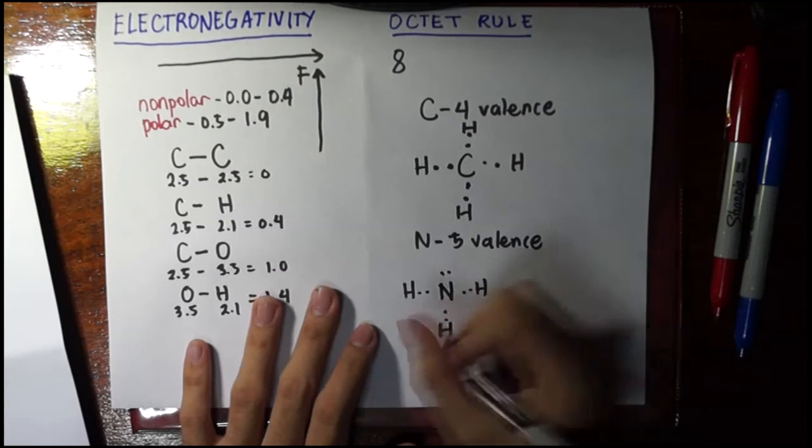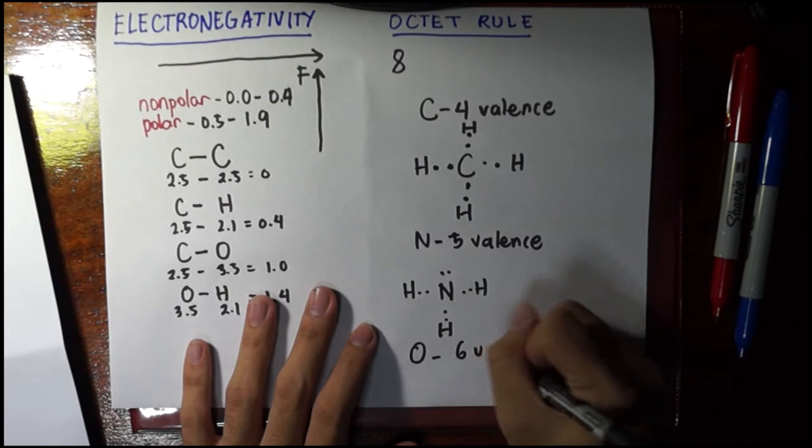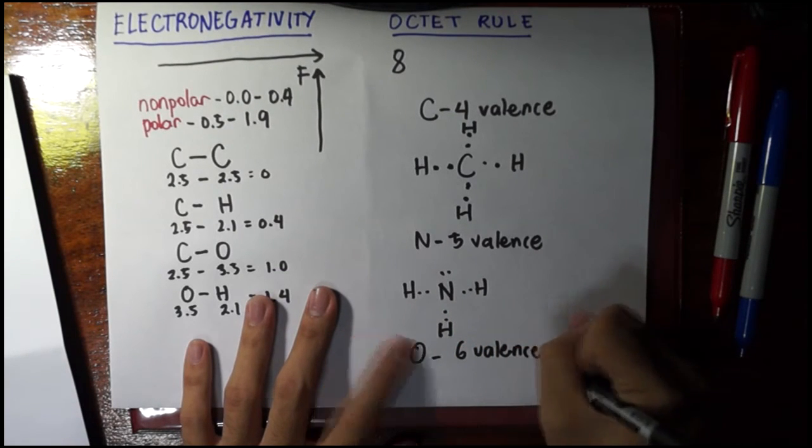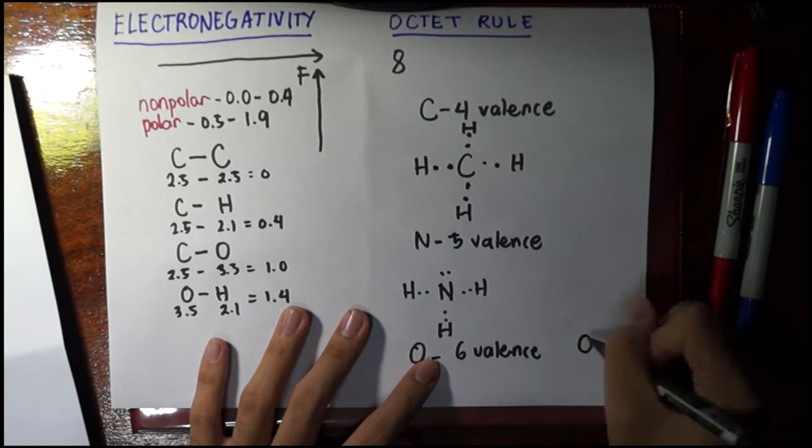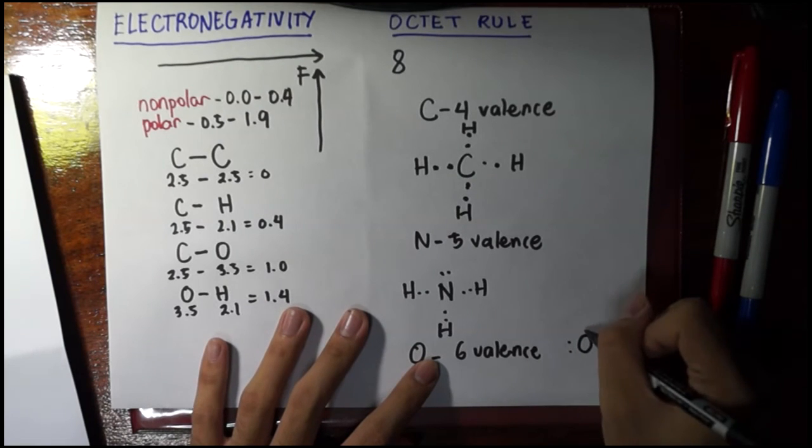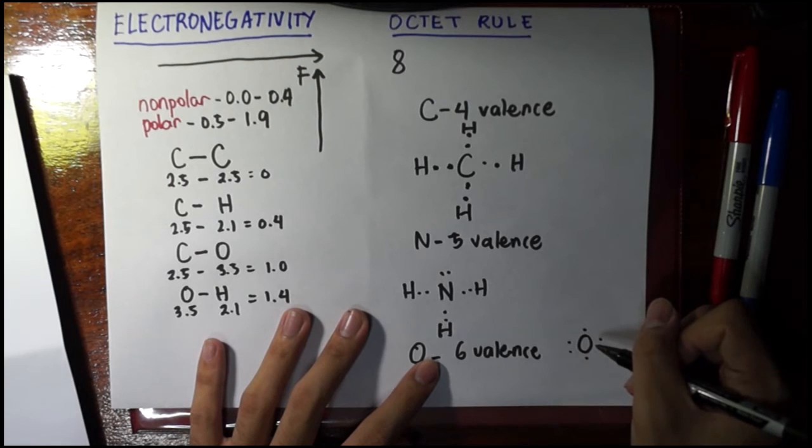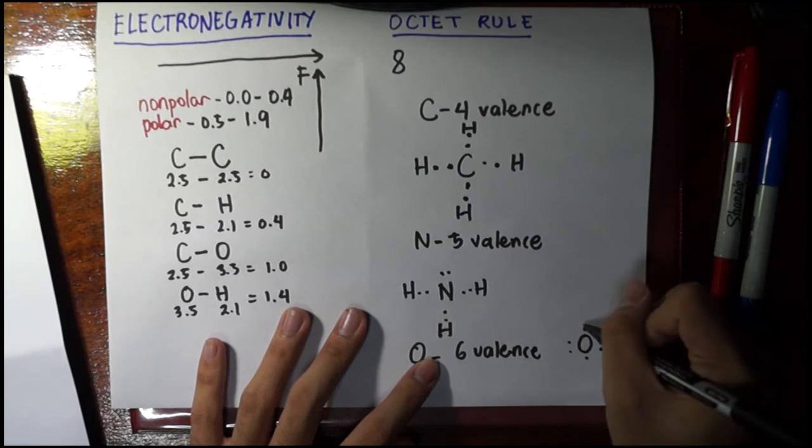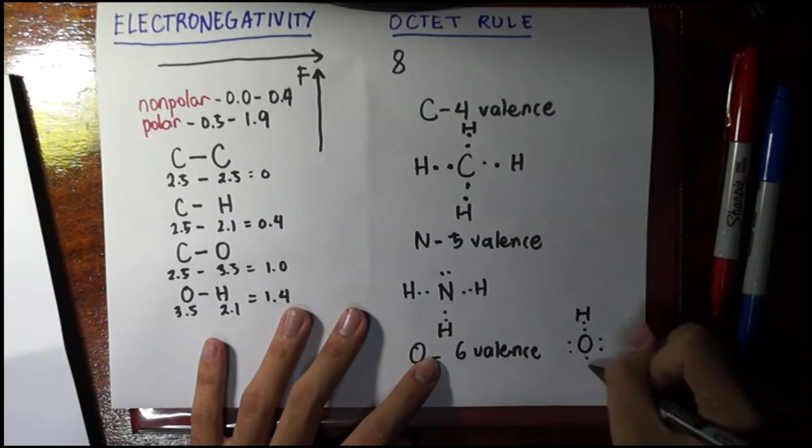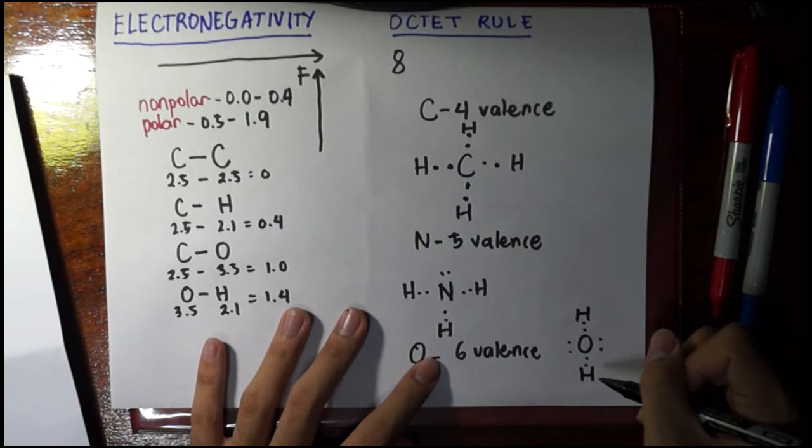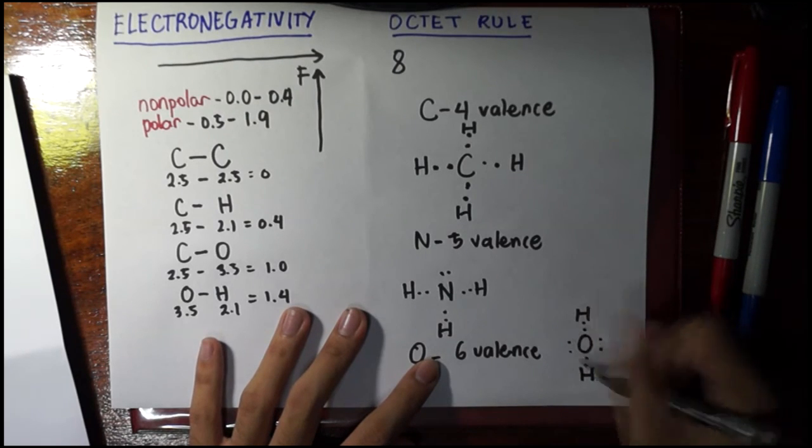And the last example for oxygen, it has six valence electrons. This one is oxygen. So one, two, three, four. Let's just put the two single electrons here. So it just needs now, we now know by pattern, it now needs just two more bonds to satisfy the octet rule.